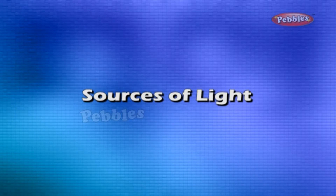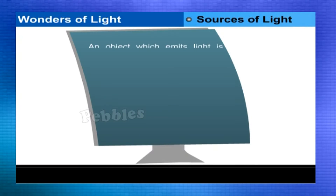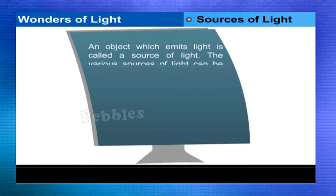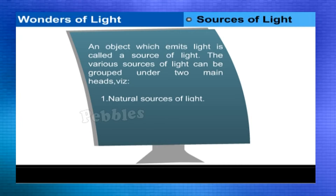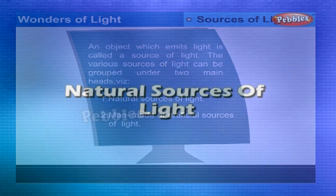Sources of Light: An object which emits light is called a source of light. The various sources of light can be grouped under two main heads: natural sources of light and man-made or artificial sources of light.